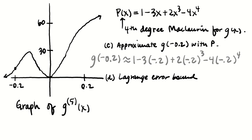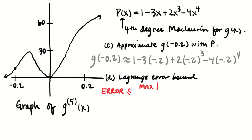The Lagrange error bound for that approximation: we need to know the form of the error bound, and that's that the error is less than or equal to the maximum of the absolute value of the next derivative.